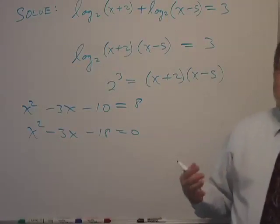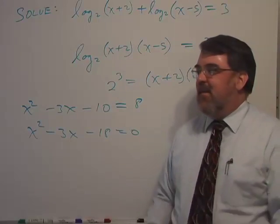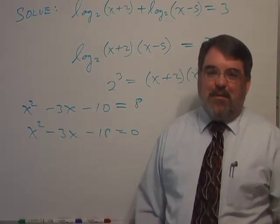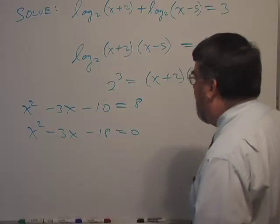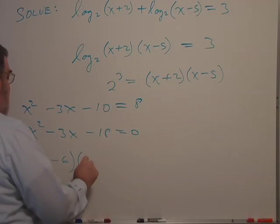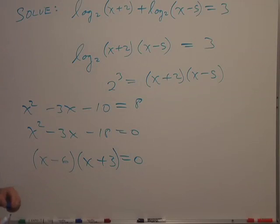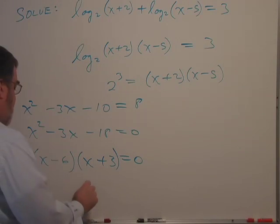Now I rigged this problem so that it would factor nicely. In real life you've got to use the quadratic formula or something worse to solve problems, but this one just happens to work out rather nicely. This will factor as (x-6) times (x+3) equals 0. So the roots of my equation would be 6 and negative 3.